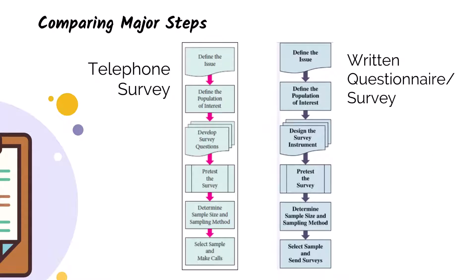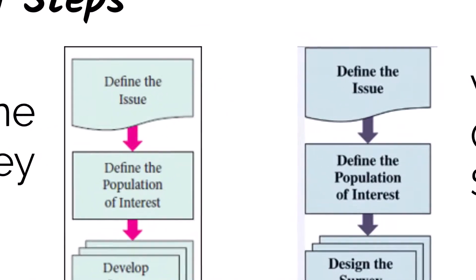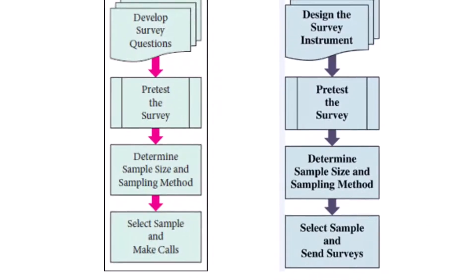They both include identifying an issue to study, and then we need to define the population of interest or the participants that we want to study. Then, we need to develop the questionnaires to ask, and then test the survey or pilot it before sending it out to the broader group.